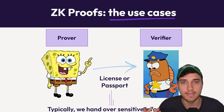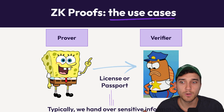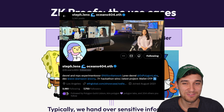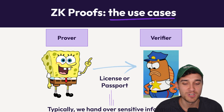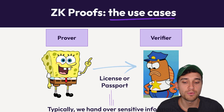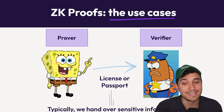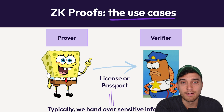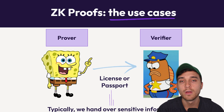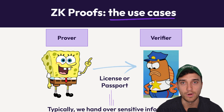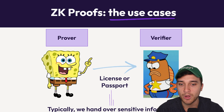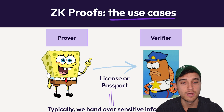A popular use case for this is in the context of identity. In SpongeBob's world — and shout out to Steph for this awesome example, her content will be linked in the description — SpongeBob gets pulled over by a police fish and wants to prove some information about his identity, like his name or that he's of legal age to be driving. What he has to do is hand over a ton of sensitive information like his license or passport, which contains all of these facts about himself: where he lives, his full name, his date of birth — all information not necessary to prove a given task to the verifier.